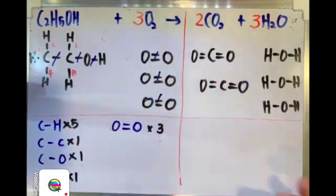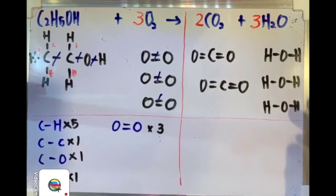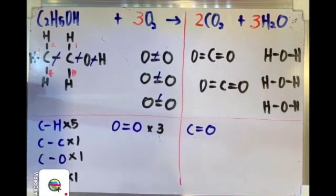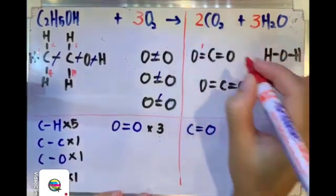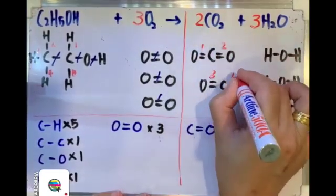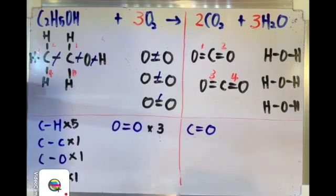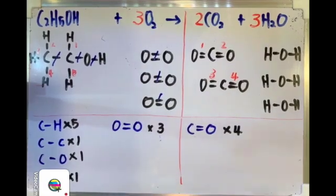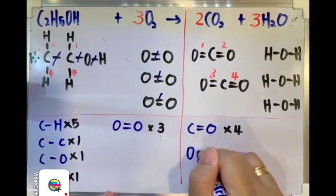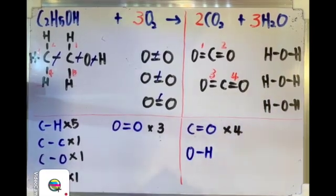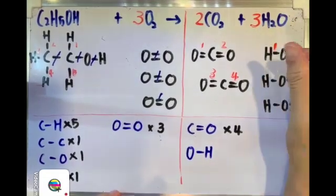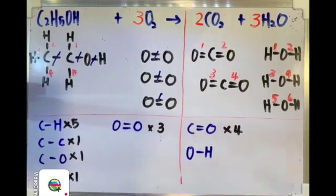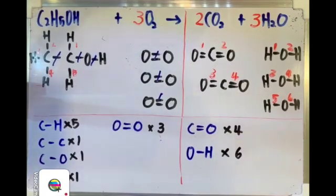Now we move on to the products. The first type of covalent bond is C double bond O. I have the first, second, third, and fourth — which means altogether there are 4 C=O double covalent bonds. Then the next type of chemical bond is O single bond H. How many? 1, 2, 3, 4, 5, and 6 — so altogether we have 6 O-H chemical bonds.